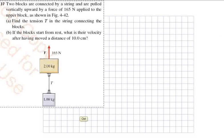This is problem 437. Two blocks are connected by a string and are pulled vertically upward by a force of 165 N applied to the upper block. Part A: Find the tension T in the string connecting the blocks. Part B: If the blocks start from rest, what is their velocity after having moved a distance of 10 centimeters?